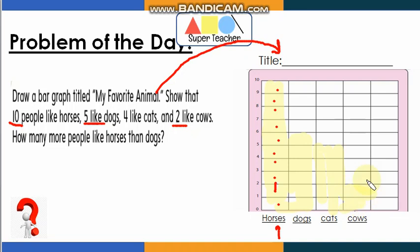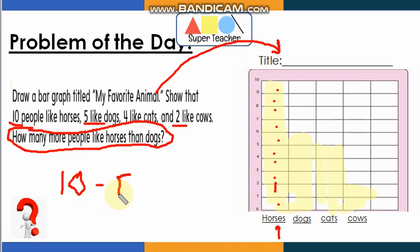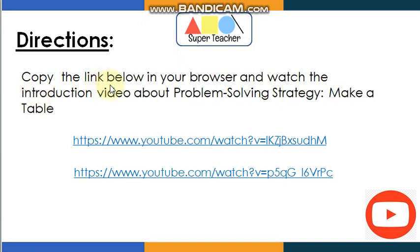Now let's read the question: how many more people like horses than dogs? We are going to subtract. How many people voted for horses? 10. How many voted for dogs? 5. So 10 minus 5 equals 5. We know to subtract because of the word 'than' — 'than' means we are going to subtract. Now copy the link below in your browser and watch the introduction video about problem solving strategy: make a table.